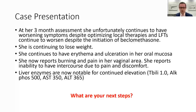She's continuing to lose weight. The erythema and ulceration is still present in her oral mucosa. She has new burning and pain in her vaginal area with an inability to have intercourse due to pain and discomfort. Her laboratory studies at this time show a total bilirubin of one, ALKPHOS up to 500, AST 350, and ALT 365. What are the next steps at this point?